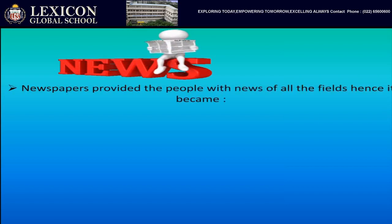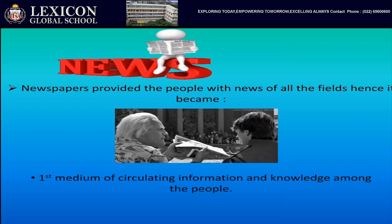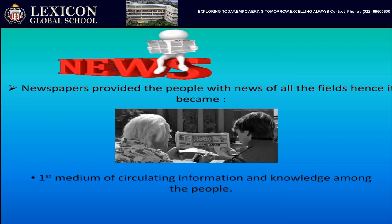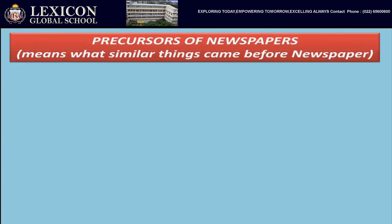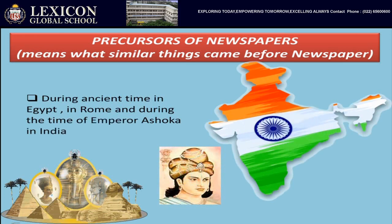We also studied why newspapers provided the people with news of all the fields, and hence it became the first medium of circulating information and knowledge among the people. We also studied the precursors of newspapers — what similar things came before newspapers during ancient times in Egypt, in Rome, and during the time of Emperor Ashoka in our country.